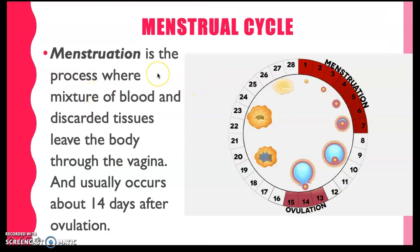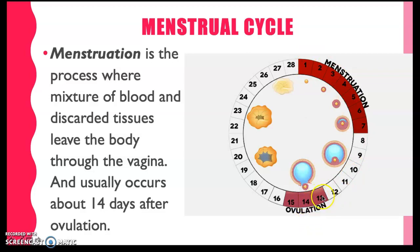Menstruation is the process where a mixture of blood and discarded tissues leaves the body through the vagina, and it usually occurs about 14 days after ovulation. If you want to know when your next menstruation is, count the first day of your menstruation period and then on the 14th day that will be your ovulation — this is the average; it could be on the 13th or 15th. Two weeks after ovulation will be your next menstruation, so another 14 days on average.